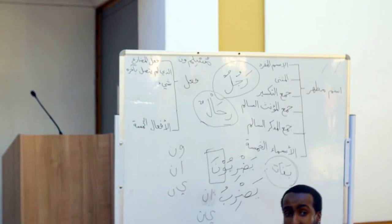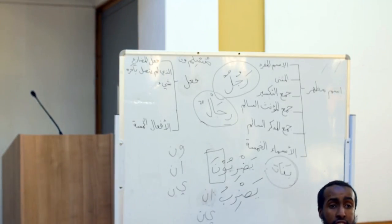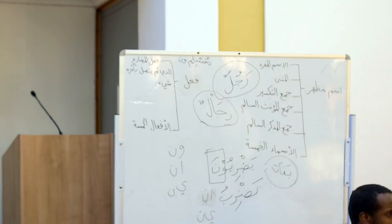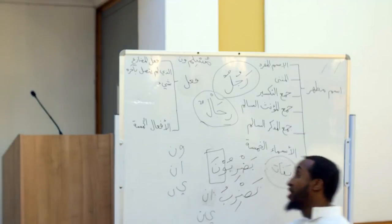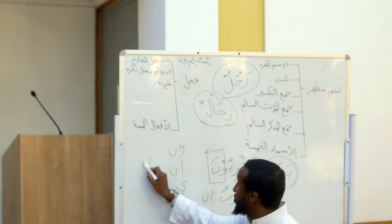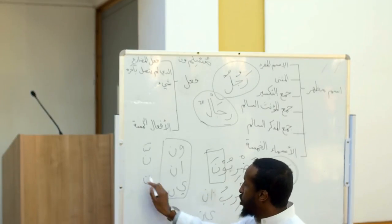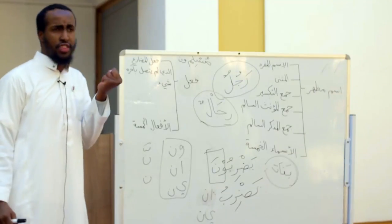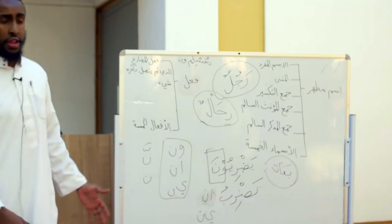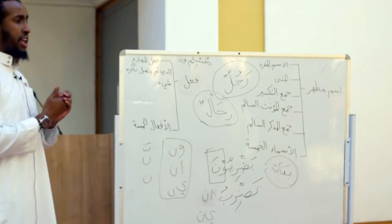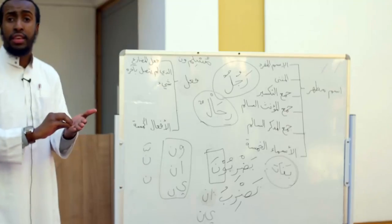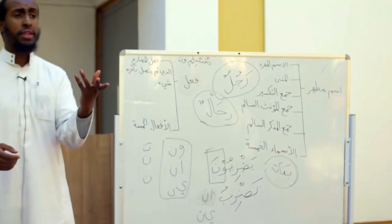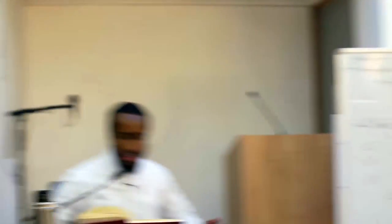Anywhere you find waw-nun, alif-nun, or ya-nun at the end — or if you find يَا الْمُؤَنَّثَةِ الْمُخَاطَبَةِ — it can't be Fi'l al-Mudari' al-ladhi lam yatasil bi-akhirihi shay. And there's another thing that shouldn't connect to it: Nun al-Tawkid and Nun al-Niswa. Nun al-Tawkid is the nun with a shadda on it — the nun of emphasis. If Nun al-Tawkid or Nun al-Niswa connects to it, it becomes mabni.